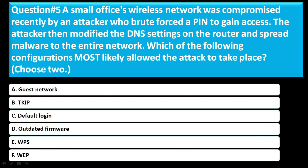Question 5: A small office's wireless network was recently compromised by an attacker who brute-forced their way to gain access. The attacker then modified the DNS settings on the router and spread malware to the entire network. Which of the following configurations most likely allowed the attack to take place? Choose two. Option A: guest network. Option B: TKIP. Option C: deferred login. Option D: outdated firmware. Option E: WPS. Option F: WEP. The correct answer is C and F — deferred login and WEP.